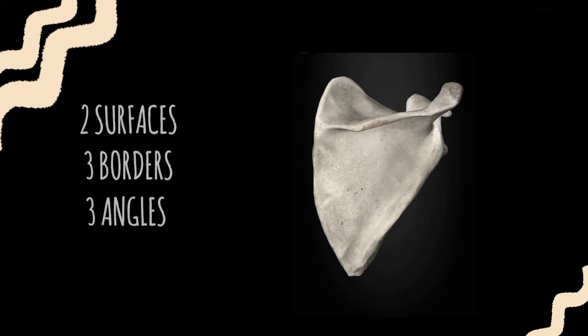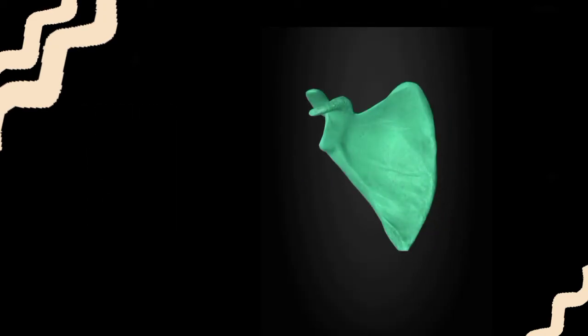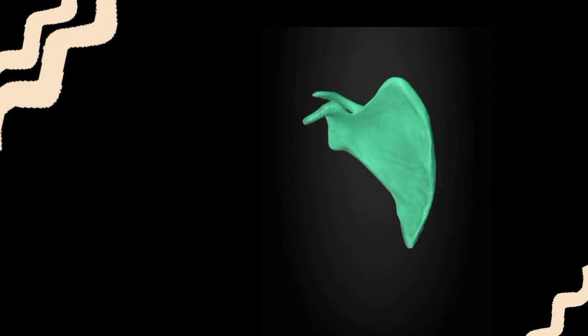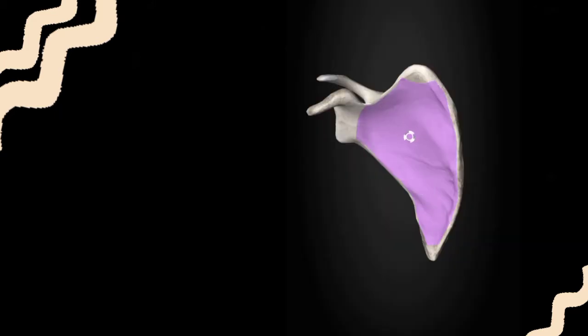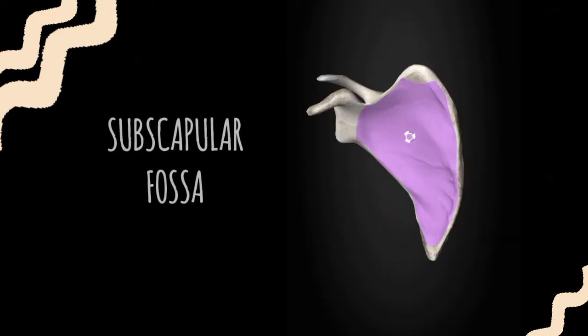The scapular bone has two surfaces, three borders, and three angles. Taking a close look, the two surfaces are the costal surface or anterior surface, and the dorsal or posterior surface. The costal or anterior surface is concave in shape and has a fossa called the subscapular fossa, which gives origin to the subscapularis muscle.